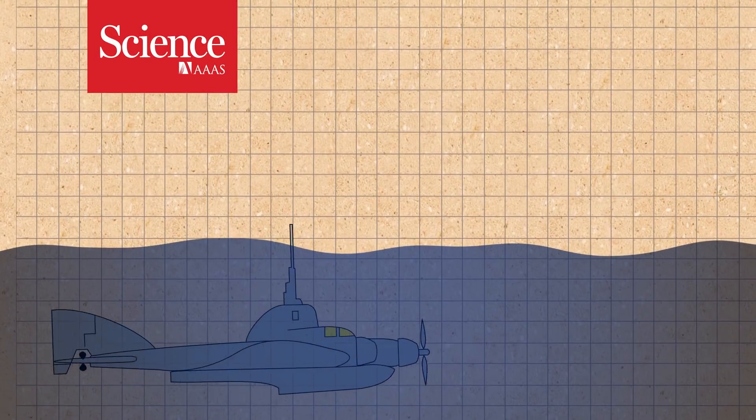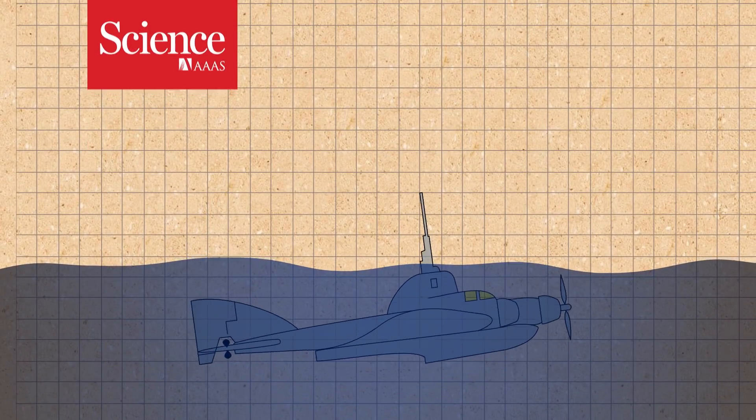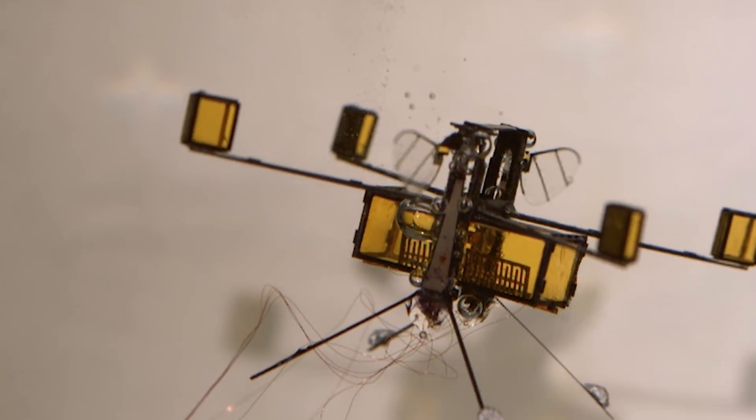Flying submarines are a common idea, both in science fiction and in real life. But this robotic insect may be the smallest one out there.